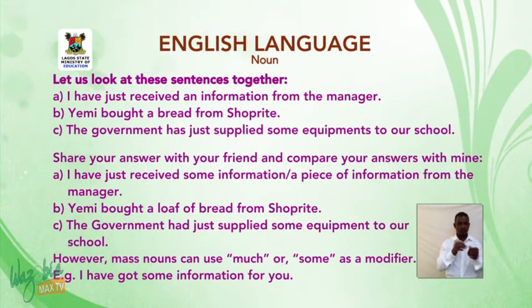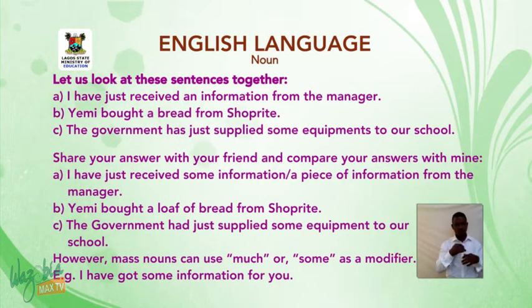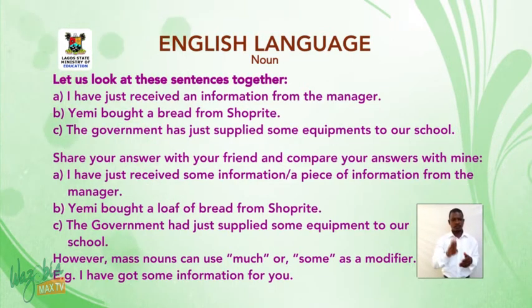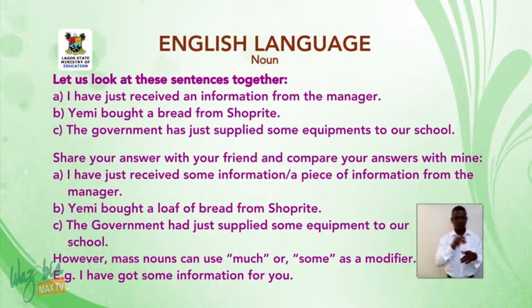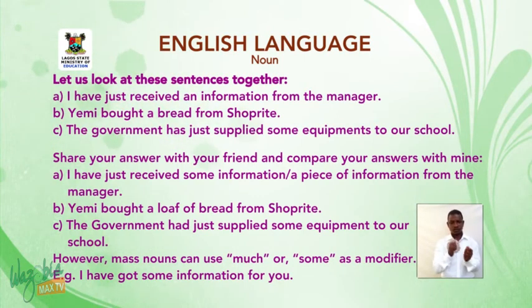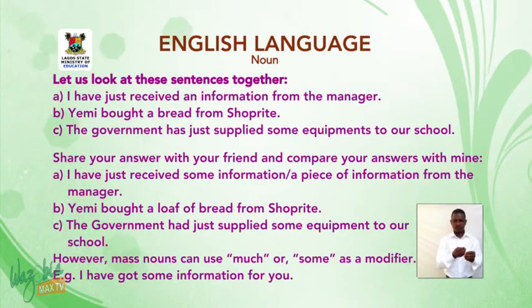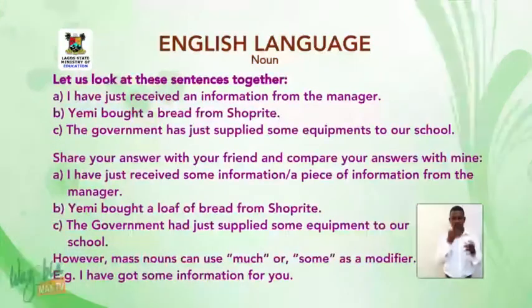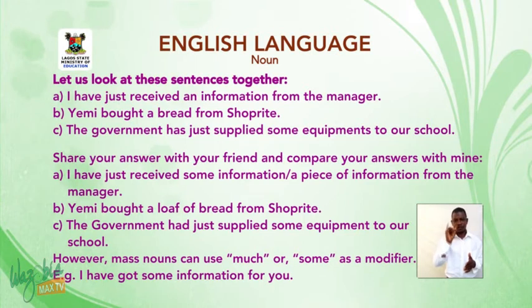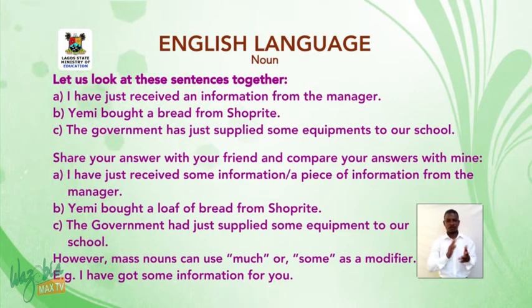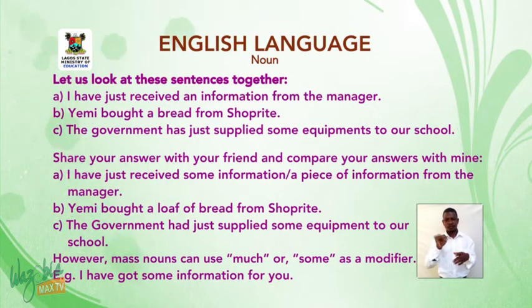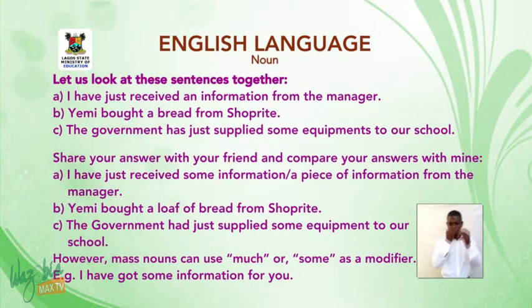Let us look at these sentences together. A: 'I have just received an information from the manager.' B: 'Yemi bought a bread from ShopRite.' C: 'The government has just supplied some equipments to our school.' Share your answers with your friend. Compare your answers with mine. A: 'I have just received some information / a piece of information from the manager.' B: 'Yemi bought a loaf of bread from ShopRite.' C: 'The government has just supplied some equipment to our school.' Mass nouns can use 'much' or 'some' as a modifier — e.g., 'I have got some information for you.'